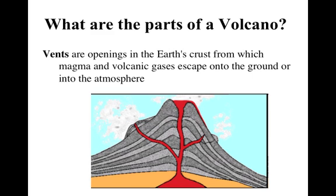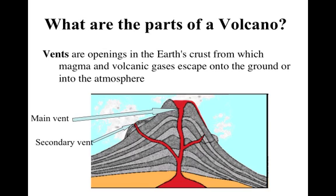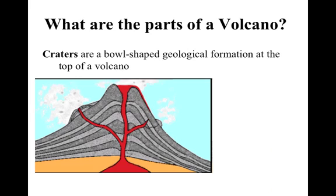Next we have the vents. The vents are the openings in the earth's crust from which the magma and all of the volcanic gases escape. We usually have a main vent and occasionally secondary vents — you could have a volcano with five or six different secondary vents. At the main vent there is generally a bowl-shaped formation at the top of the volcano called the crater. Secondary vents can have small craters, but when we refer to the crater of the volcano we're usually talking about the main vent from the main volcanic conduit.